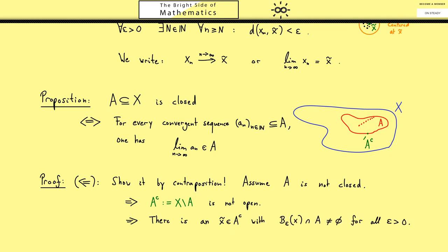So you find an x tilde here on the boundary such that you can use any epsilon ball but you always hit points in A.